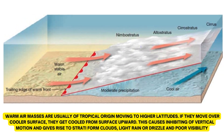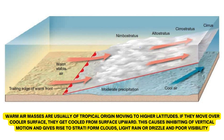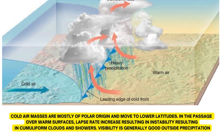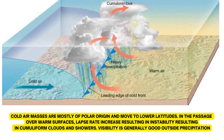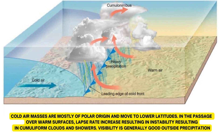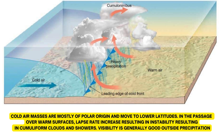Warm air masses are usually of tropical origin moving to higher latitudes. When they move over cooler surfaces, they cool from the surface upwards, inhibiting vertical motion and giving rise to stratiform clouds, light rain, drizzle, and poor visibility. Cold air masses are mostly of polar origin moving to lower latitudes. Over warm surfaces, the lapse rate increases, resulting in instability, cumuliform clouds, and showers — and visibility is generally good if it is not raining.